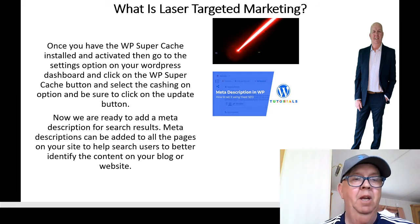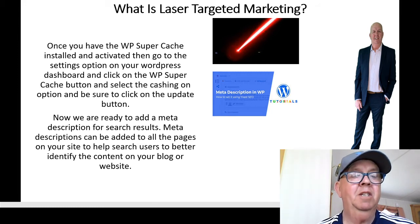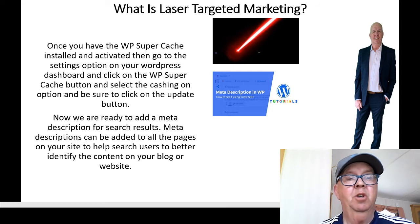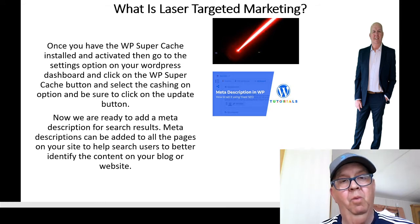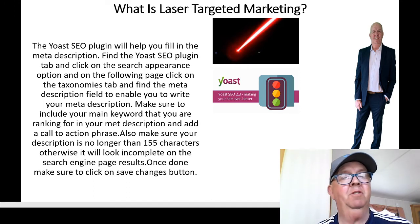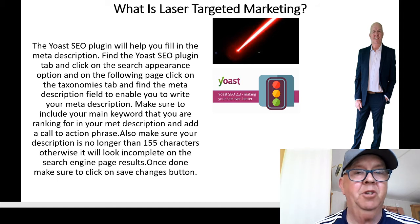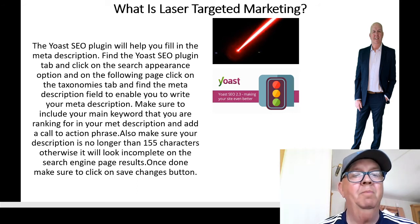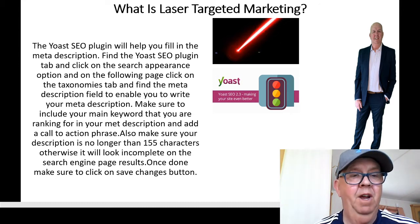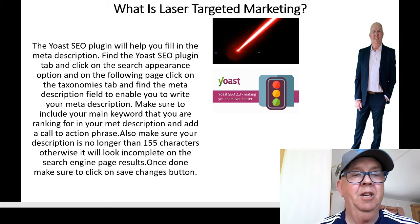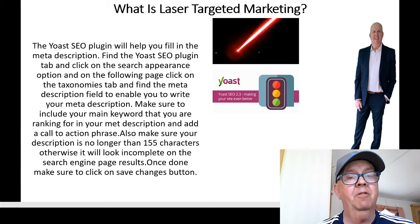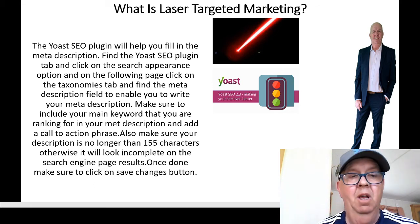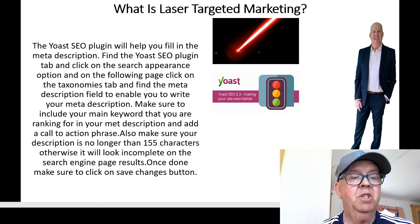Now we are ready to add a meta description for search results. Meta descriptions should be added to all pages on your site to help search users better identify your content. The Yoast SEO plugin will help you fill in the meta description. Find the Yoast SEO plugin tab, click on Search Appearance, then on the following page click on the Taxonomies tab and find the meta description field. Make sure to include your main keyword in your meta description, and add a call-to-action phrase. Also make sure your description is no longer than 155 characters — not words, characters — otherwise it will look incomplete in search engine results. Once done, click Save Changes.